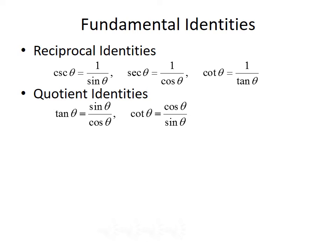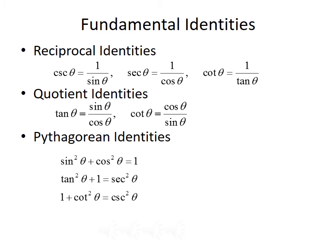Next, we have the quotient identities. This tells us that tangent of theta equals sine over cosine. And since cotangent is the reciprocal of tangent, cotangent of theta equals cosine of theta over sine of theta. Finally, we have the Pythagorean identities: sine squared of theta plus cosine squared of theta equals 1; tangent squared of theta plus 1 equals secant squared of theta; and 1 plus cotangent squared of theta equals cosecant squared of theta.